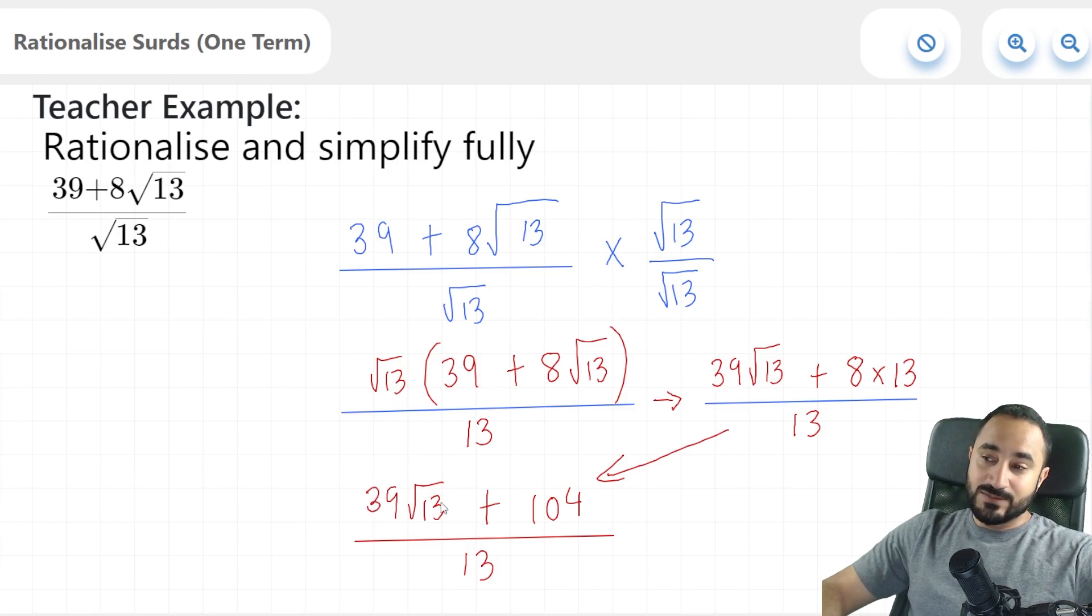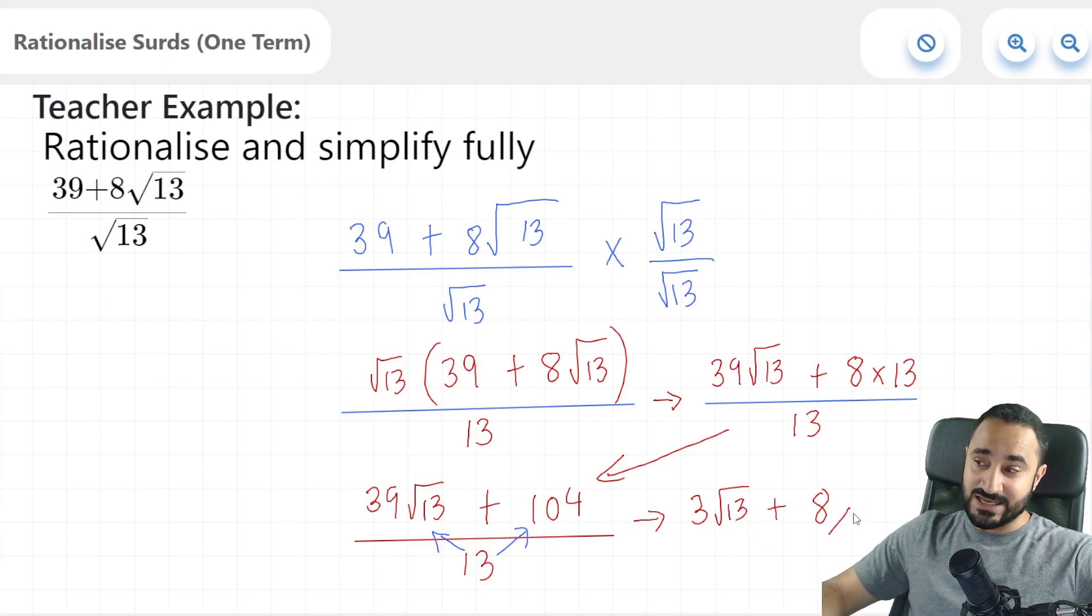Now at this stage, you might think this is fully simplified, but it can actually be simplified even further. You see, this 39 root 13 can be divided by this 13 and this 104 can also be divided by this 13. The 39 root 13 divides by 13 to give us the following: 39 divided by 13 is three, and then it's lots of root 13. Don't forget if you have an expression as the numerator being divided by a single value, that value distributes into both of the terms that are above. So now we're going to have to do plus 104 divided by 13. If you don't know how to do this off the top of your head, you could just go up in your 13 times tables until you reach 104. And if we do this, we get the number 8. Now this 13 has divided into both of these two terms here, leaving us with a fully simplified expression of 3 root 13 plus 8. And this is our final answer here.